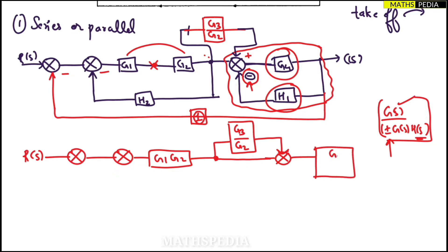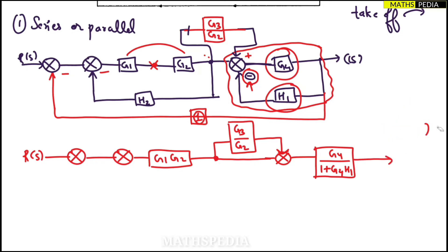To resolve this minor loop part: use the formula G(s) / [1 ± G(s)·H(s)]. Here G(s) is G4, H(s) is H1. The feedback sign is minus, so I take the opposite sign — plus. So this block becomes G4 / [1 + G4·H1], and it goes towards the output C(s).